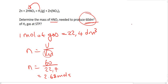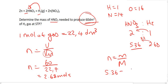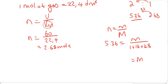The question wants the mass of HNO₃, so we use the mole ratio between hydrogen and HNO₃ from the equation, which is 2 to 1. We have 2.68 moles of hydrogen, so we multiply by 2 to get 5.36 moles of HNO₃. Using n = M/Mm with molar mass 63, that gives mass = 5.36 × 63 = 337.68 grams.